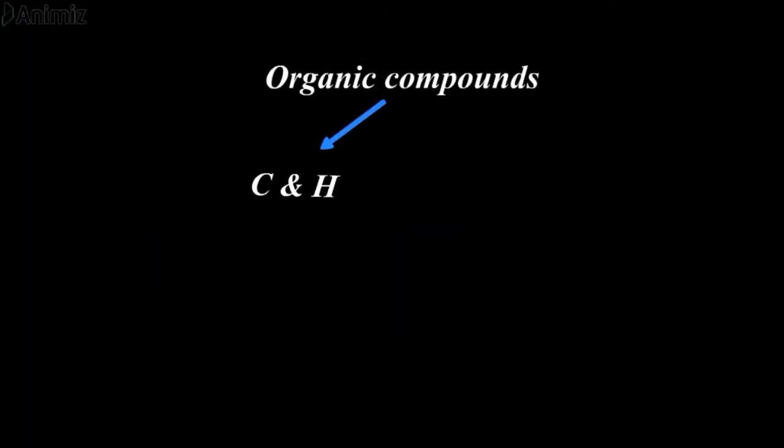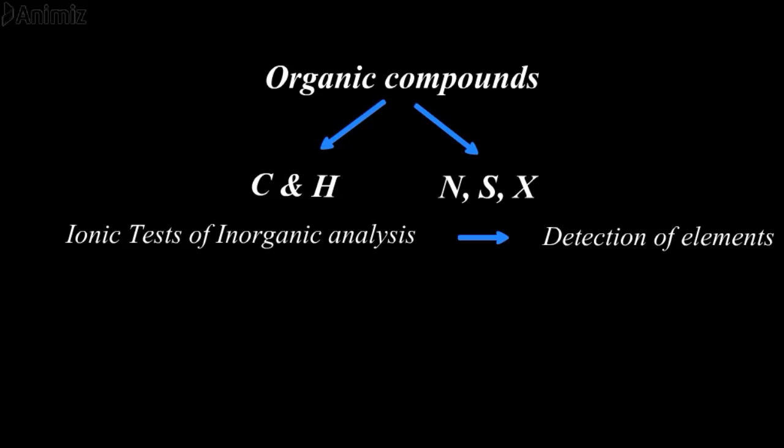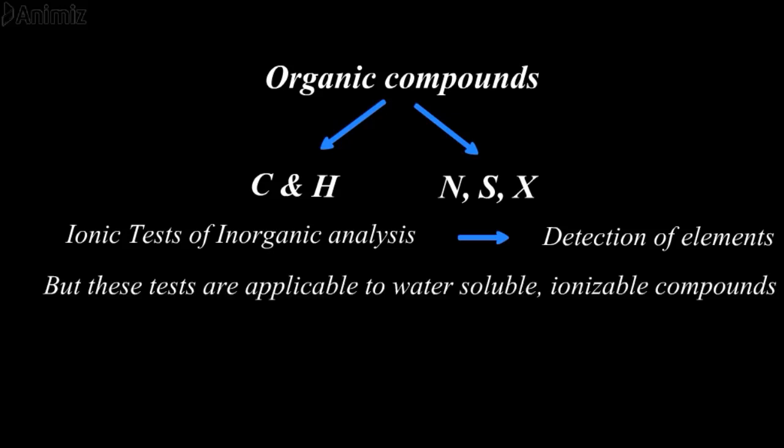Organic compounds mostly contain carbon and hydrogen. Apart from it, they may contain nitrogen, sulfur, or halogens. Ionic tests of inorganic analysis can be used for detection of elements. But these tests are applicable to water-soluble and ionizable compounds only.